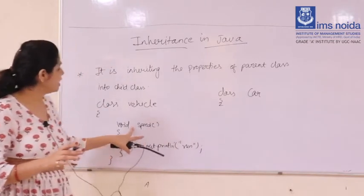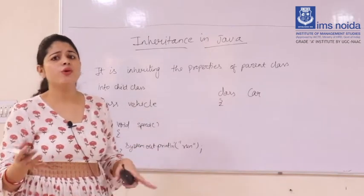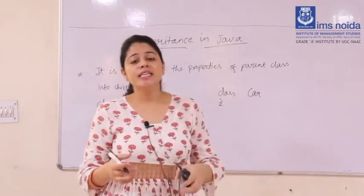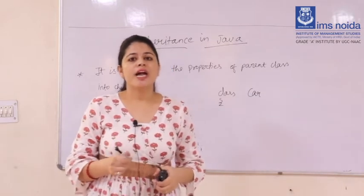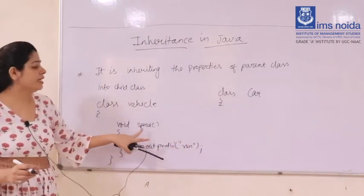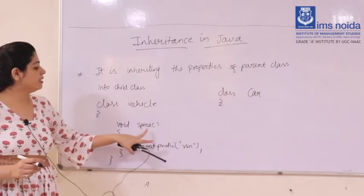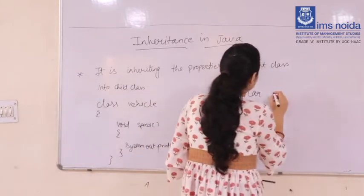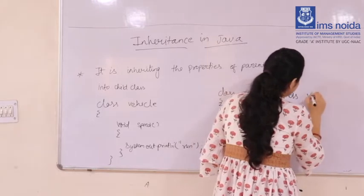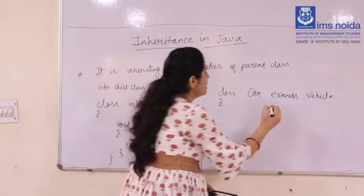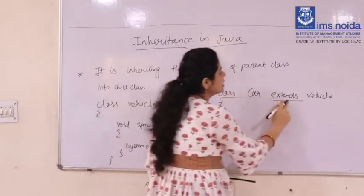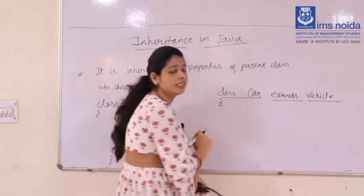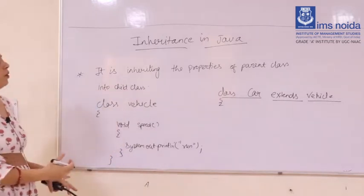Should I write the speed method again? No, I don't want to. If I write this method again it will increase the lines of code in your program, which is not good programming. So I can simply reuse this concept — I simply inherit the speed method by using the keyword extends Vehicle. The keyword 'extends' explains that we are inheriting all the properties from the parent class.